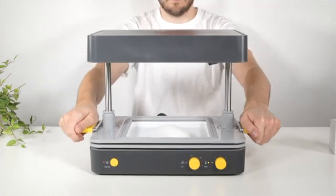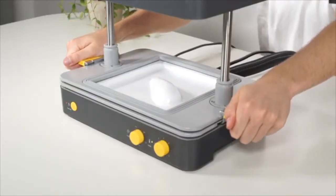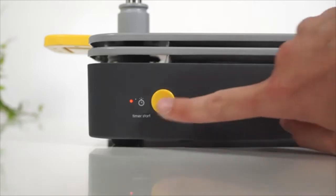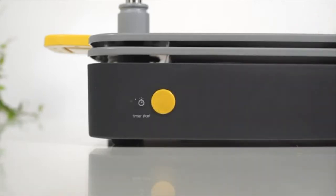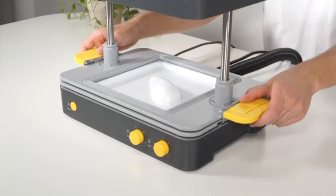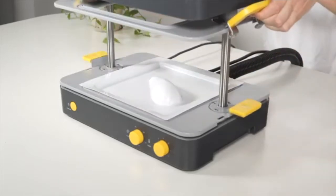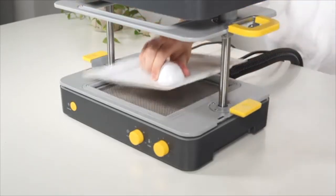The vacuum will switch on automatically for 10 seconds. You can shut the vacuum off during this time by pressing the timer start button. Leave the sheet to cool for a few seconds, then release the handles to remove your form.